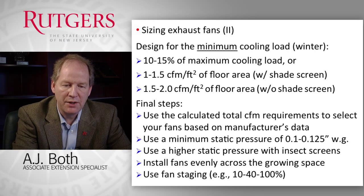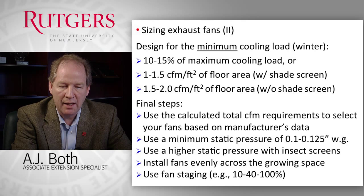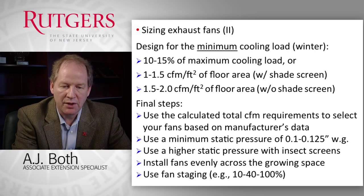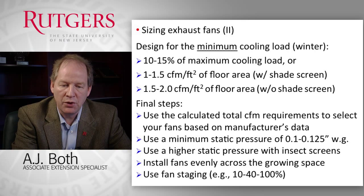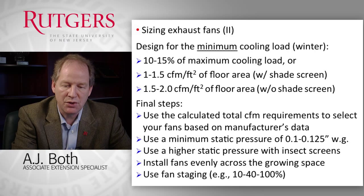After making those calculations, you have your maximum and minimum cooling capacity requirements. You can then go to manufacturers' published data — their brochures — and look at different capacities, sizes, and static pressures they are able to overcome. You want to pick a fan that is able to deliver the required ventilation rate at a certain minimum static pressure. We typically use 0.1 or 0.125 inches of water gauge as the minimum static pressure the fan needs to overcome. You can use a higher static pressure if you also install insect screens, because they add additional resistance to airflow through your structure.